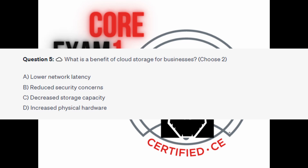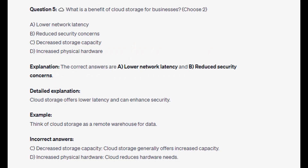Is it A: Lower network latency. Is it B: Reduced security concerns. Is it C: Decreased storage capacity. Or is it D: Increased physical hardware. You are now on 5 seconds. And the correct answers are A and B: Lower network latency and reduced security concerns.